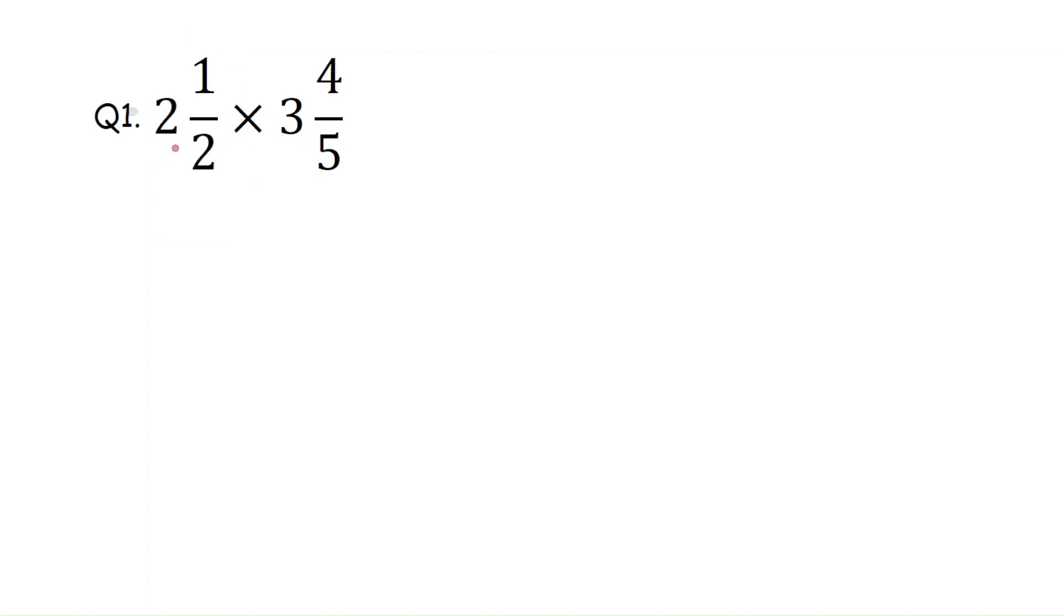How will we convert into improper fraction? First, you need to multiply the whole number to the denominator and whatever the result will come, add to the numerator. Here also multiply the whole number to the denominator and whatever the result will come, add to the numerator.